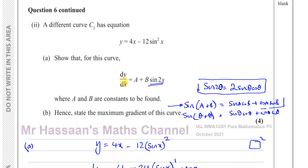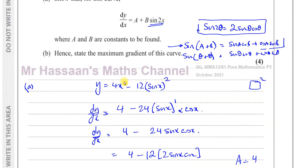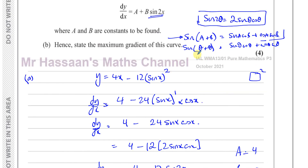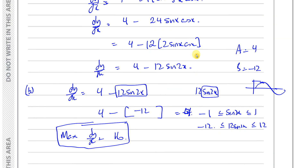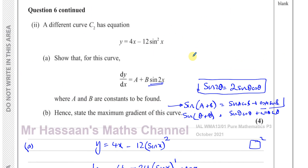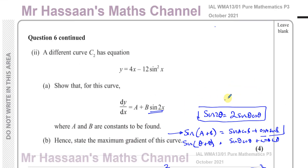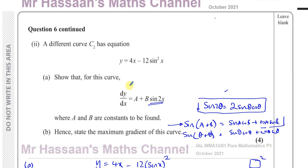And there we have finished this question — not a very difficult question. You just need to know the double angle identity. Other questions from this paper are in the playlist that should appear here. Other questions on differentiation of trigonometry are in the differentiation section of P3 in the playlist. Subscribe to my channel by clicking this link. Thank you for watching and see you soon.